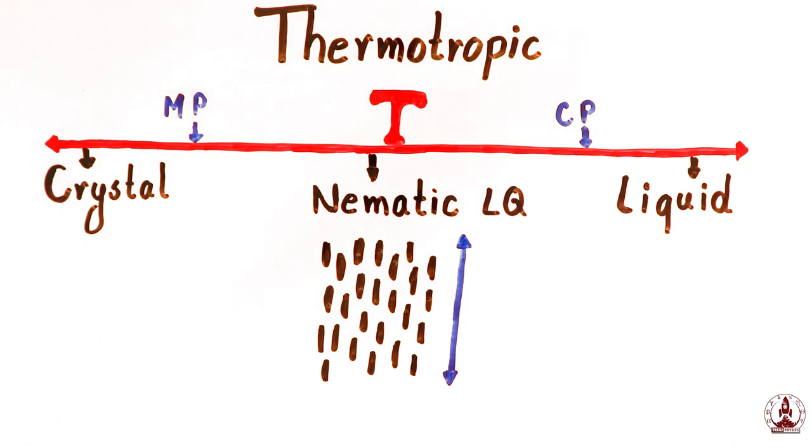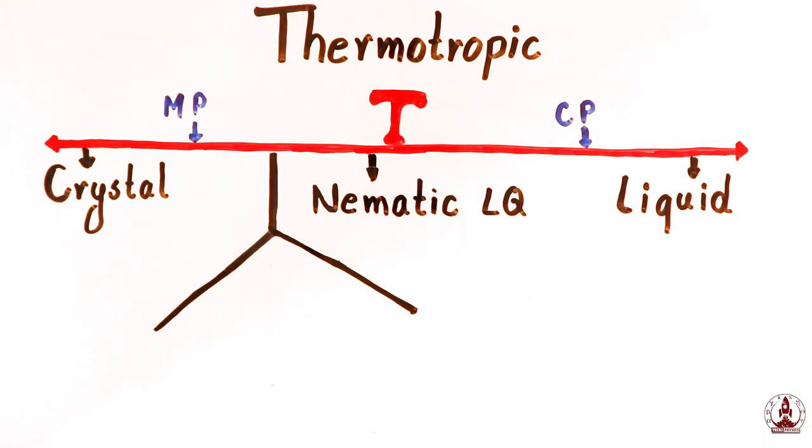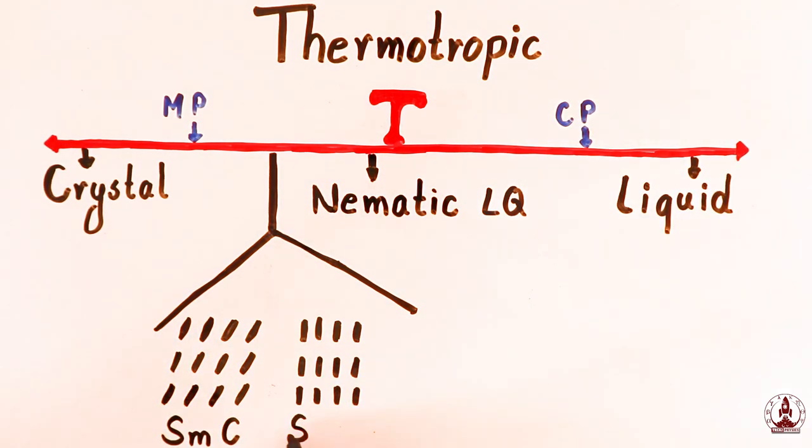You might be thinking, can liquid crystal also have translational order? Yes, for this, you have to move a bit left in this diagram and look in between the crystal and nematic liquid crystal phase. They often go with the name of smectic C and smectic A. Yes, this crazy naming liquid crystals have both translational and orientational order.